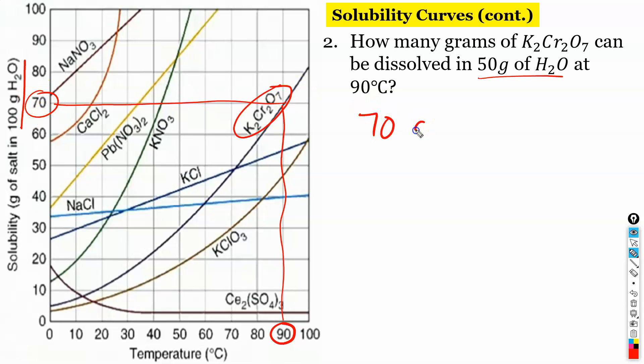So if we have 70 grams at 100 grams of water we just halve it. So 35 grams in 50 grams of H2O.